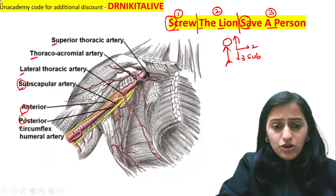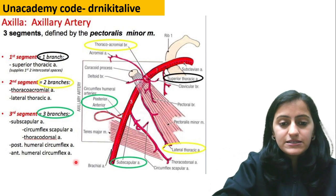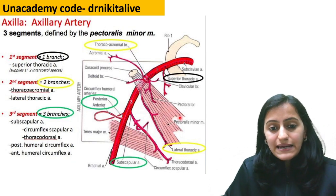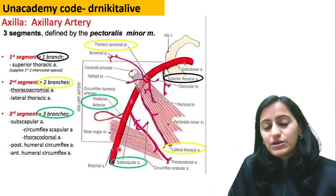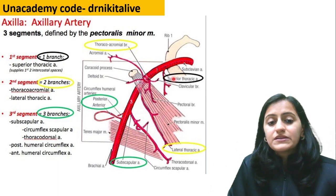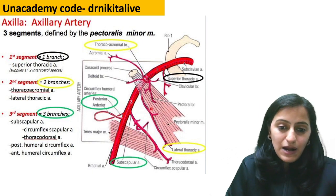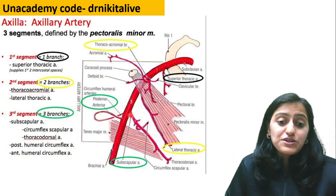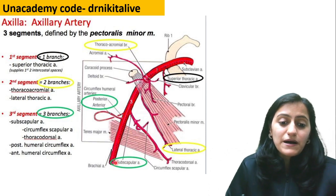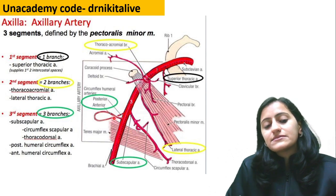Looking at the anatomy images: you can see the pectoralis minor inserted on the coracoid process, dividing the axillary artery into three parts. First part gives superior thoracic artery. Second part gives thoracoacromial and lateral thoracic — the branch lateral to pectoralis minor is the lateral thoracic. The largest branch from the third part is the subscapular, followed by posterior and anterior circumflex humeral.